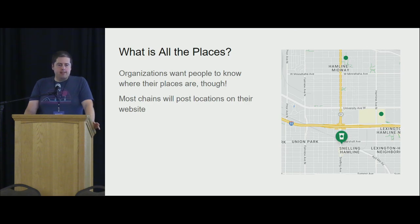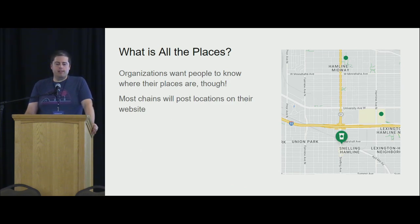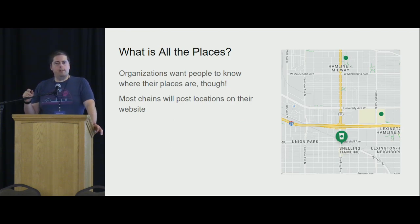So that leads to All the Places. All the Places is a collection of data scrapers that reach out to organizations — because it's more than just restaurants — that want people to know where their businesses are. They'll put those on the Internet, usually in a nice format with location and all sorts of metadata attached. But they're all in unique APIs and websites and templates, and they have pictures in different places. So All the Places is designed to capture that data and scrape it into a standard format.